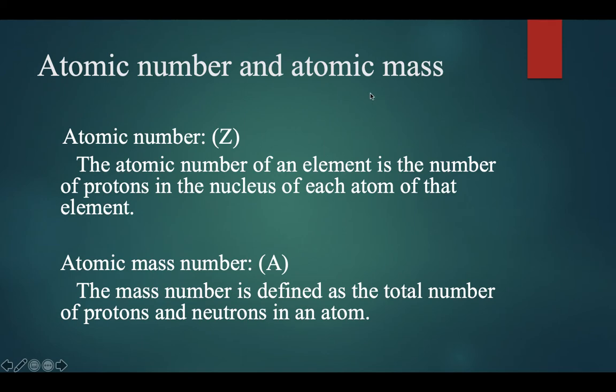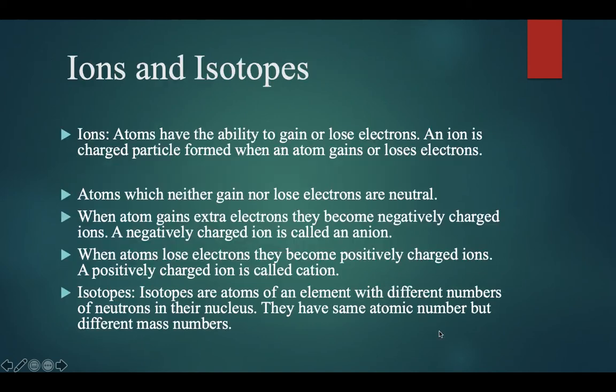Atomic number and atomic mass number: Atomic number of an element is the number of protons in the nucleus of each atom of that element. Atomic mass number is defined as the total number of protons and neutrons in an atom.